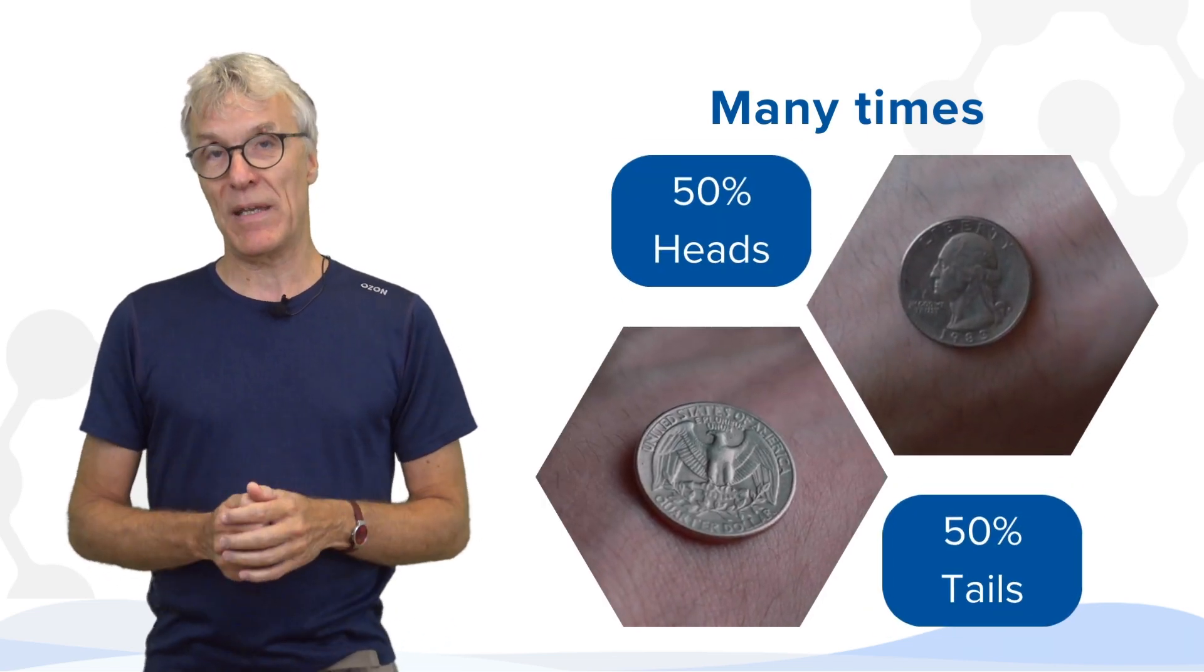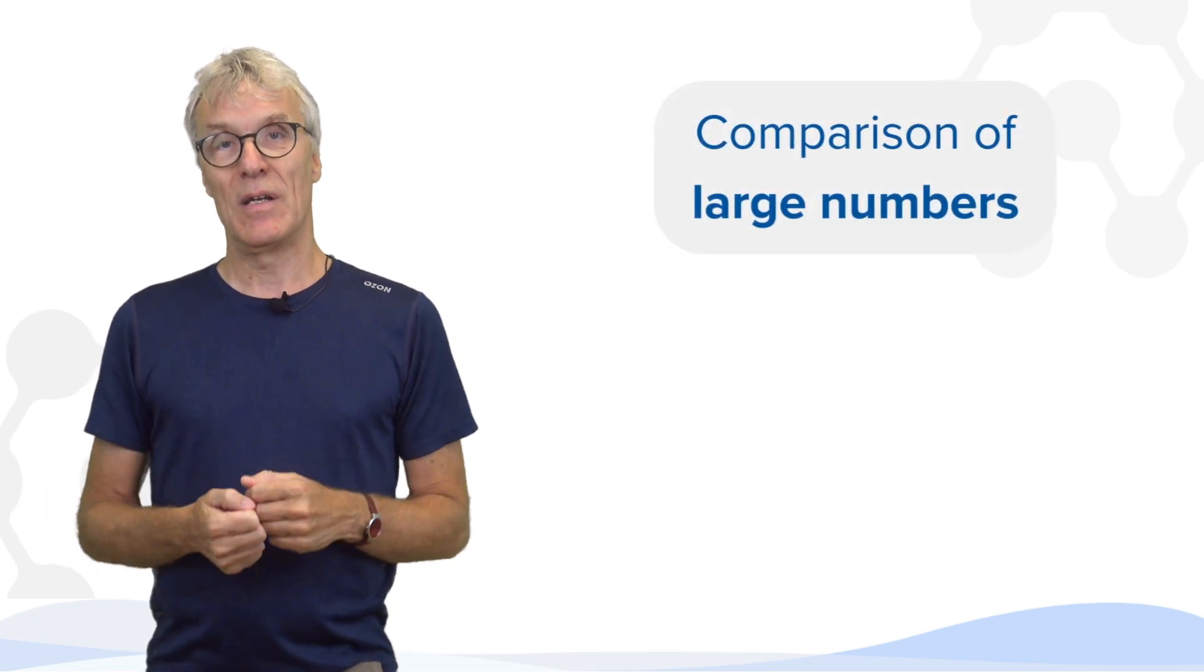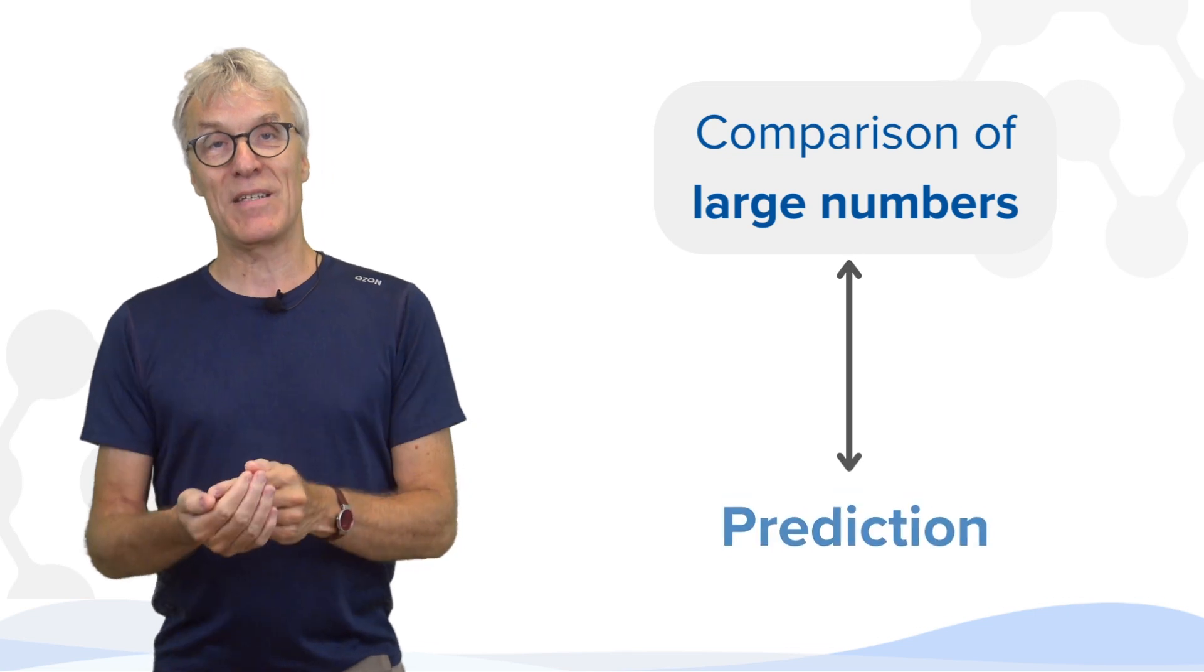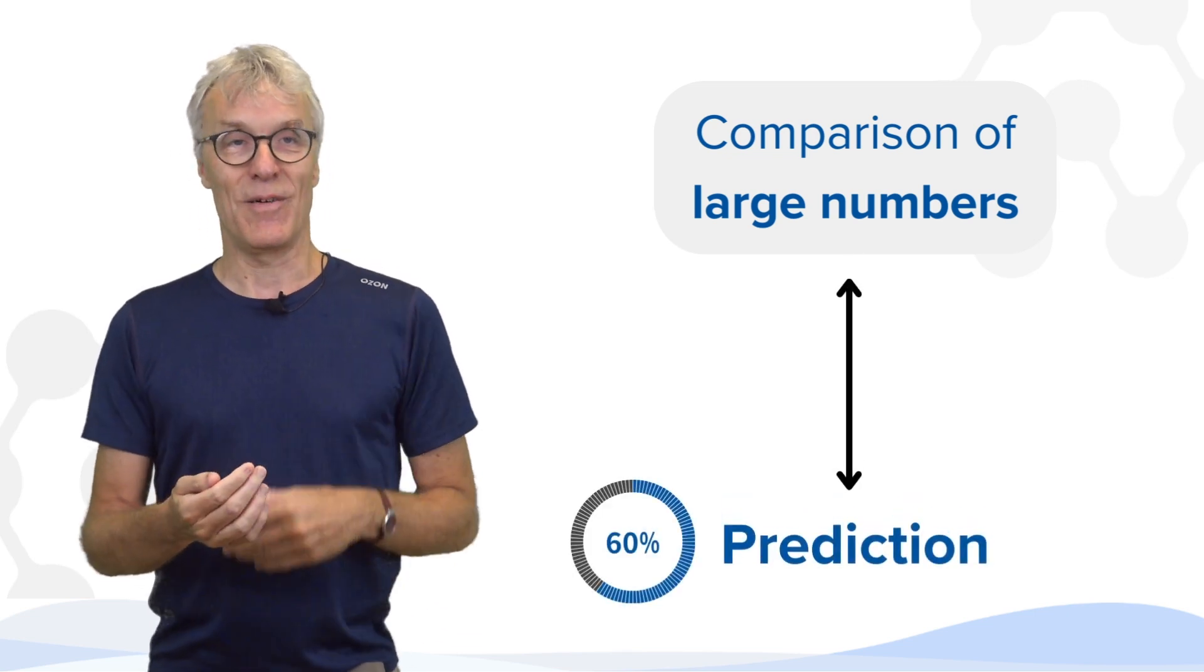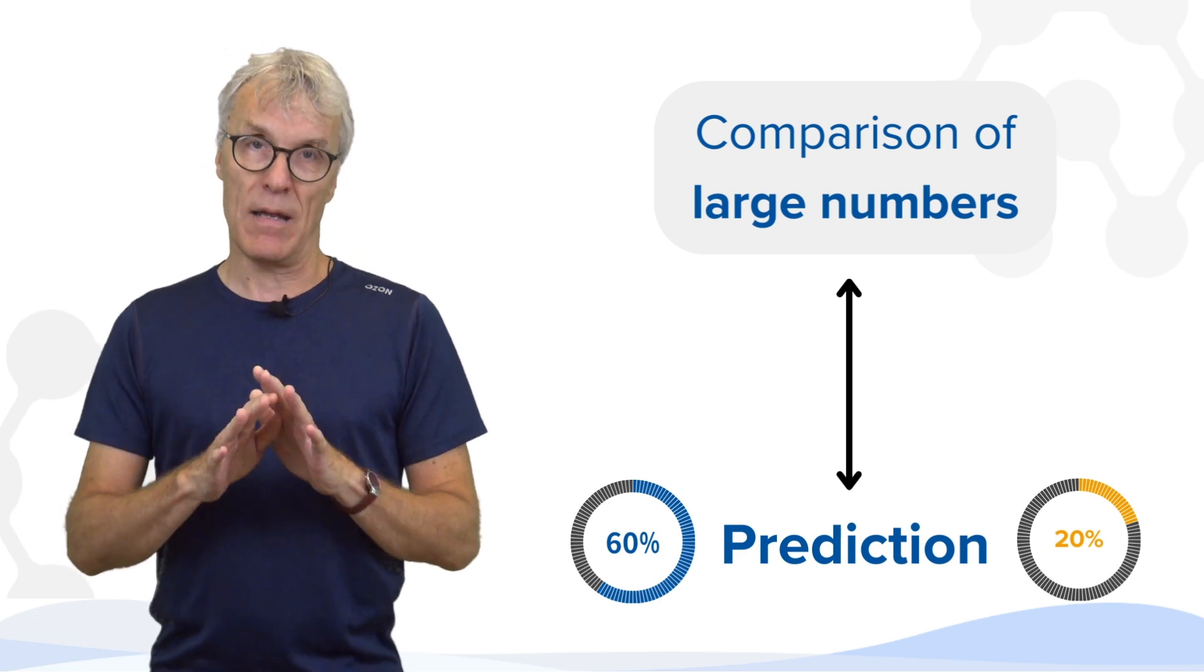And the early application of quantum theory was always this comparison of large numbers. And you would compare those large numbers with a prediction who would say 60 percent or 20 percent of the times you will measure this or that. So that was nice and fine.